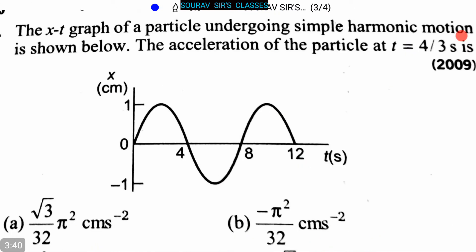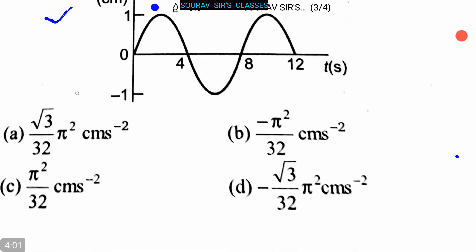Now let's proceed to the next question. The x-t graph of a particle undergoing simple harmonic motion is shown. The acceleration of the particle at t = 4/3 seconds is required. The options are: (a) √3/32 π² cm/s², (b) -π²/32 cm/s², (c) π²/32 cm/s², and (d) -√3/32 π² cm/s².